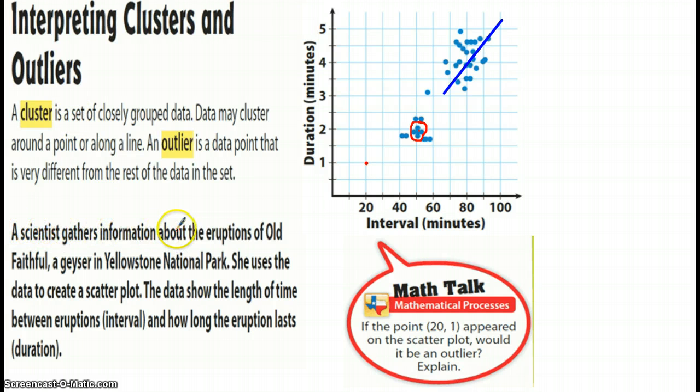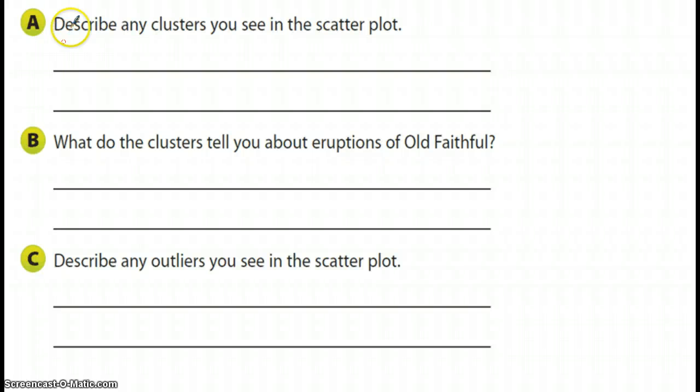Well the author says, scientist gathers information about the eruption of Old Faithful, a geyser in Yellowstone National Park. She uses the data to create a scatter plot, which is this data here that she created. Each one of these particular points here is an eruption. The data shows the length of time between eruptions and intervals and how long the eruptions last. So what I want you to do is go back and look at the data, pause it right now, make sure you get these questions down: describe any clusters that you see in the scatter plot, and what do the clusters tell you about eruptions of Old Faithful, and describe any outliers you see in the scatter plot.